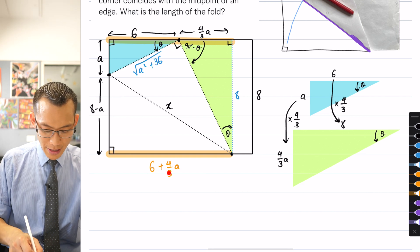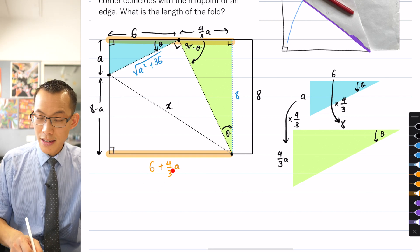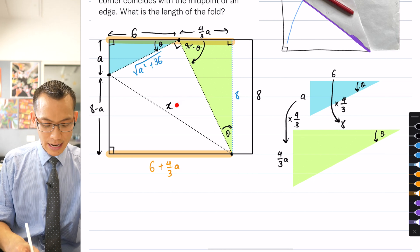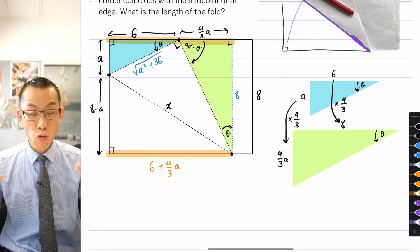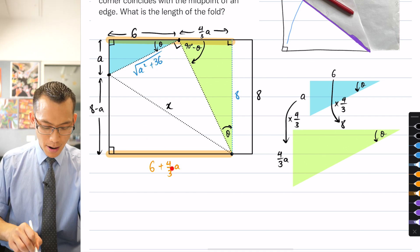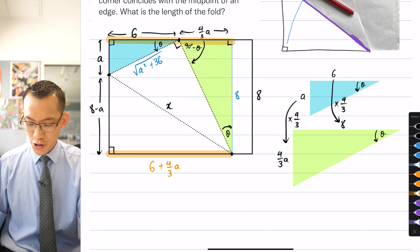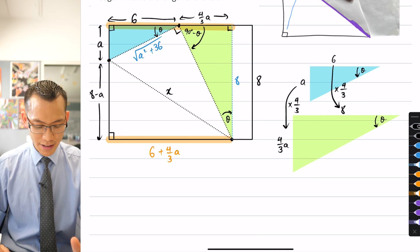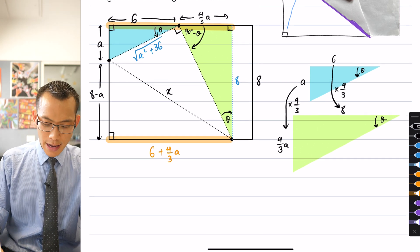It's the same right angle triangle up there. 6 plus 4 thirds A is one of the shorter lengths, 8 minus A is another shorter length, and it just gives you X. Now you might be sorely tempted to say this is great, I can actually combine these two together, but you're going to find that it's not enough.